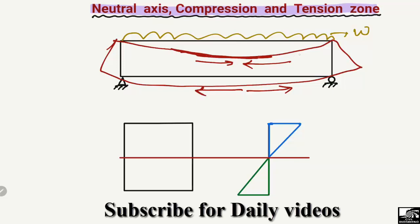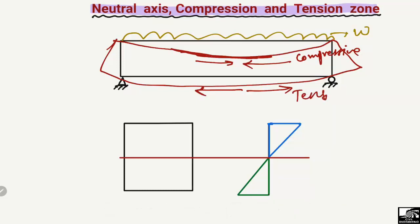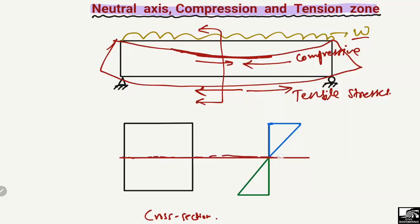At the top of the beam we will see some compressive stresses, while at the bottom of the beam we will see some tensile stresses. This is the general behavior of the beam under uniformly distributed load. Now, if we look at how the neutral axis can be defined — if I cut this beam at the mid, I will see the cross-section of the beam. Due to the load on the beam, at the mid portion there will be a zone where there are no stresses acting.